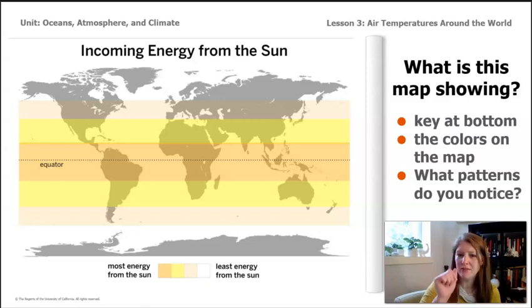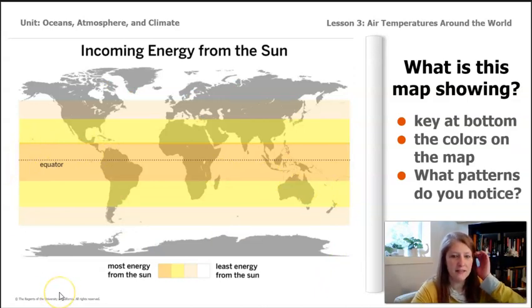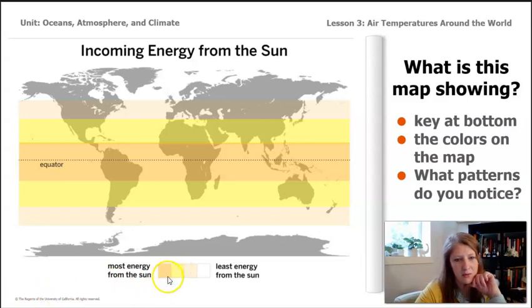One thing that I notice here is it doesn't have quite the same amount of color as the map that we were just looking at, and the lines are very horizontal. The key here says that the light orange that's right along the equator says most energy from the sun, and then the white line, which is here at the south pole and the north pole, show least energy from the sun. I notice the title says incoming energy from the sun. So I will infer that this map is telling me that the closer I am to the equator, the more energy that part of the earth is getting from the sun. Why would that be?